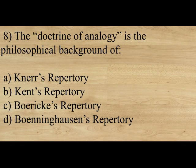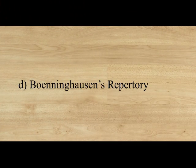The doctrine of analogy is the philosophical background of Boenninghausen's repertory. Boenninghausen's main concept was to complete the symptom in respect of its location, sensation, modality, and concomitant. In order to complete the symptom, he gave the concept of doctrine of analogy. The four main principles of his repertory were: doctrine of analogy, doctrine of concomitant, evaluation of remedy, and concordance — concordance means relationship of remedy.